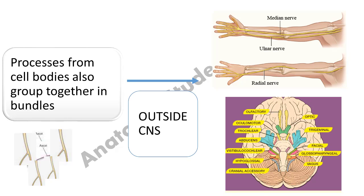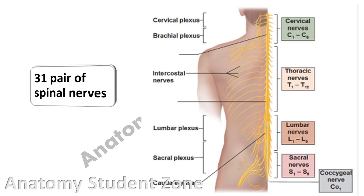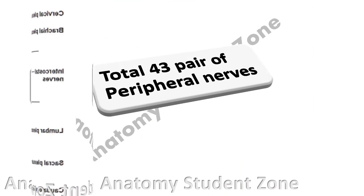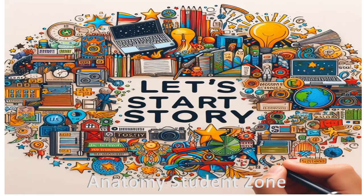The peripheral nervous system consists of peripheral nerves which can be cranial or spinal. We name them cranial or spinal according to where they exit the central nervous system. If they exit the cranium or brain we name them cranial nerves; if they exit from the spinal cord we name them spinal nerves. There are 12 pairs of cranial nerves and 31 pairs of spinal nerves, giving a total of 43 pairs of peripheral nerves.